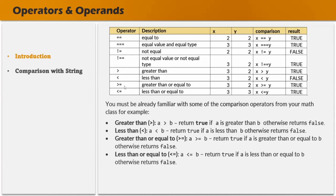Then we have greater than equal to. For 3 greater than equal to 2: 3 is greater than 2 but not equal to 2, so since 3 is greater than 2, this returns true. For 3 less than equal to 3: 3 is not less than 3, but 3 is equal to 3, so it returns true. These are simple comparison operators which return a boolean value.